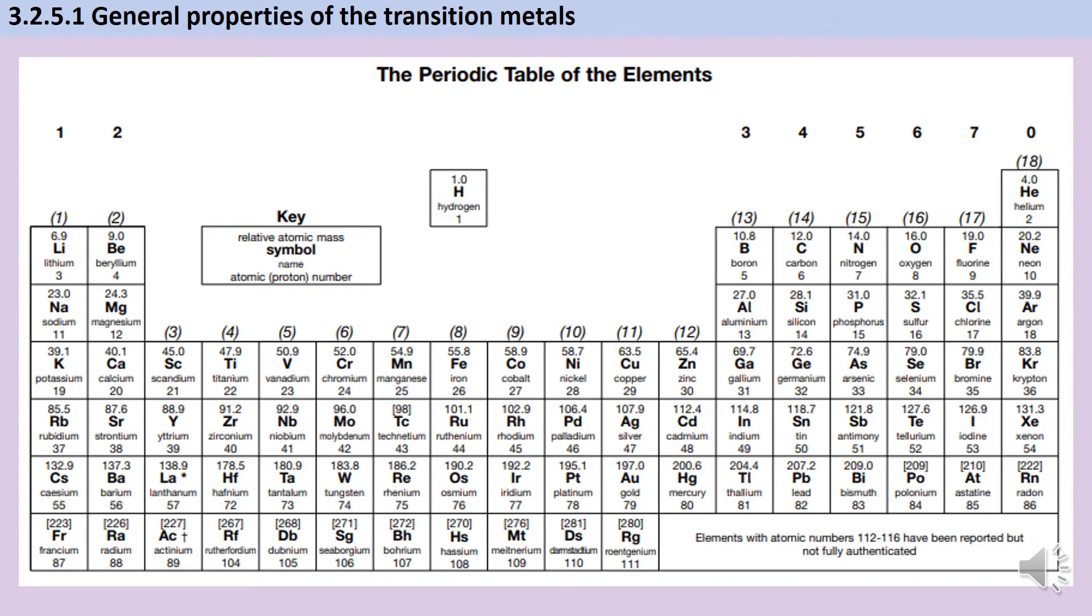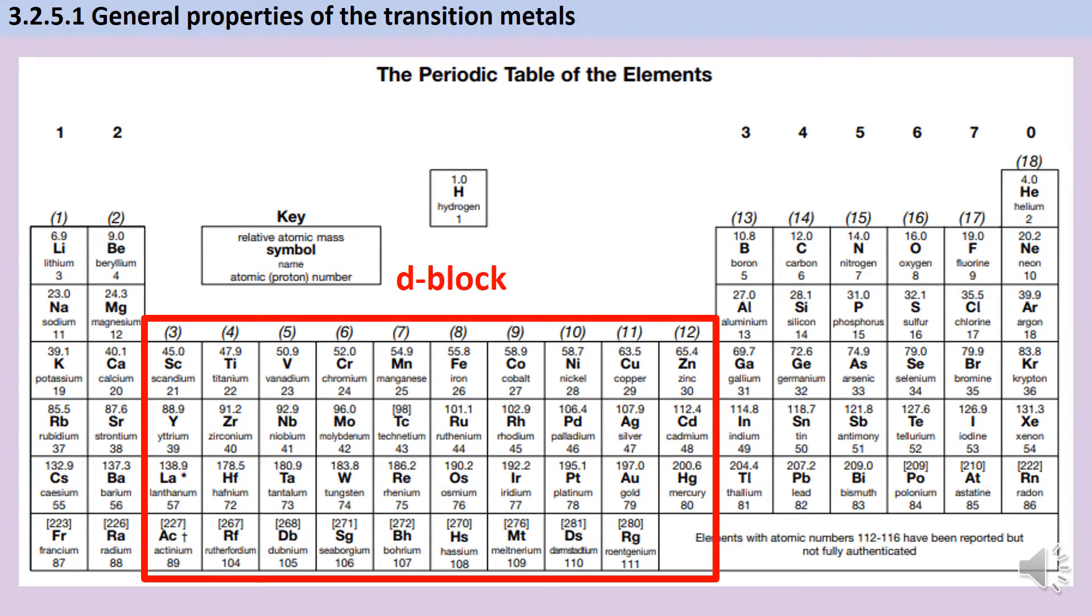So just to emphasize this, here's our periodic table. Between group 2 and group 3 or group 13, we have what's known as the d-block. All of the elements in the d-block have their outermost highest energy electron in one of the d orbitals in the d subshell, and the d subshell has room for 10 electrons.